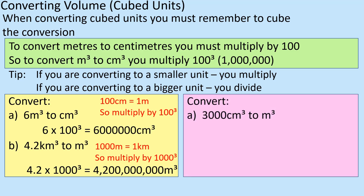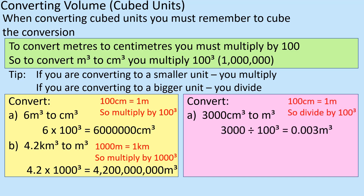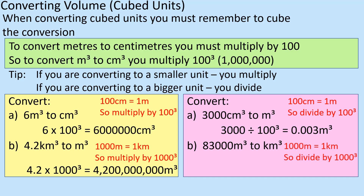The other way around: 3,000 centimetres cubed to metres cubed — my unit is getting bigger, so my value must get smaller. The conversion is 100, so divide by 100 three times, giving 0.003 metres cubed. Then 83,000 metres cubed to kilometres cubed: the conversion is 1,000, so divide by 1,000 three times, giving 0.0000083 kilometres cubed.